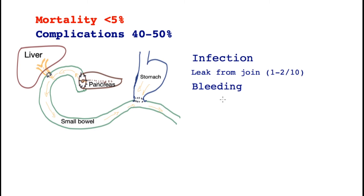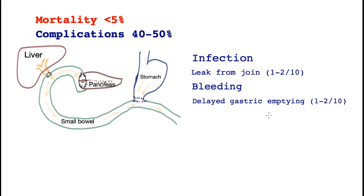Other than intraoperative bleeding, post-operative bleeding is rare but can occur and is one of the causes for return to theater. The source of bleeding may be from within the stomach at the ends of where the join has been made, or more dangerously, if there is a leak from the pancreas, that juice can erode blood vessels and cause significant bleeding requiring immediate treatment. The risk of bleeding is less than five percent.